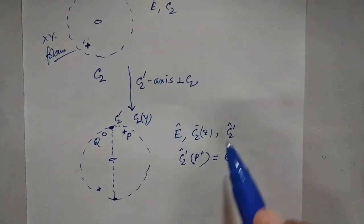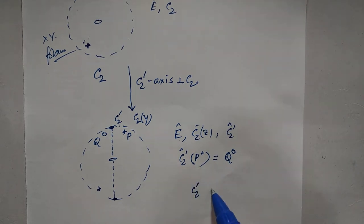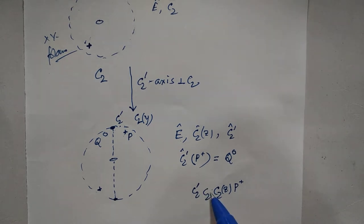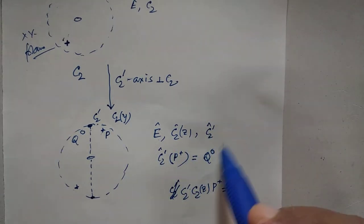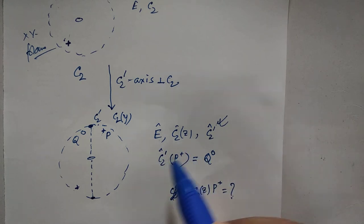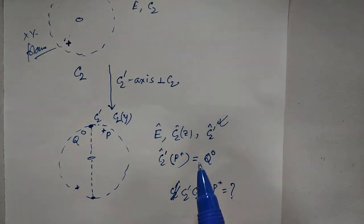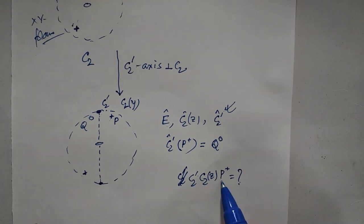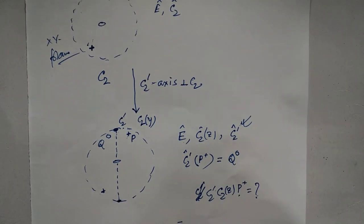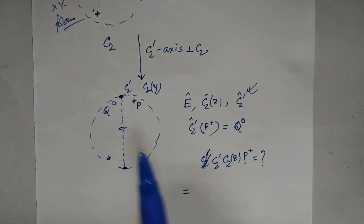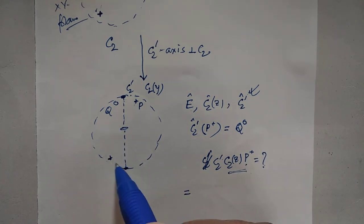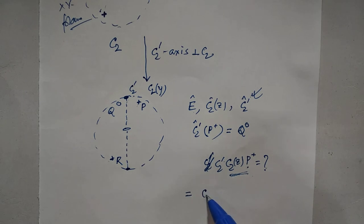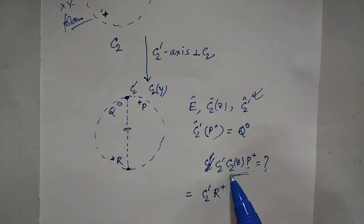Now, if we carry out C2z first on P-plus and then apply C2-prime, we need to find the result of this product. By C2z rotation, P comes to a new position R. Then C2-prime rotation about the y-axis takes R — which is above the plane — and moves it from left to right and below the plane of the paper. Its projection will be indicated by a hollow circle. This new point is named S-hollow.